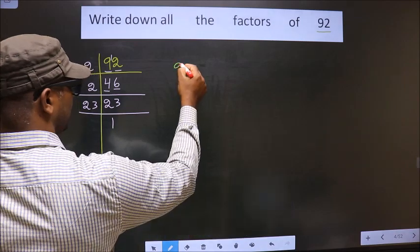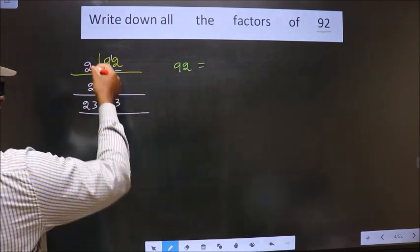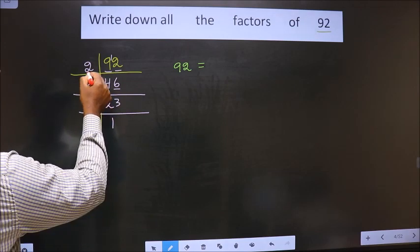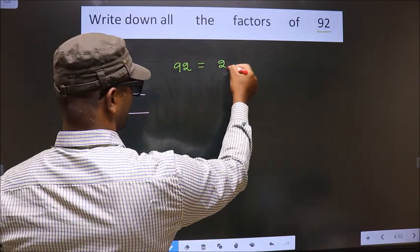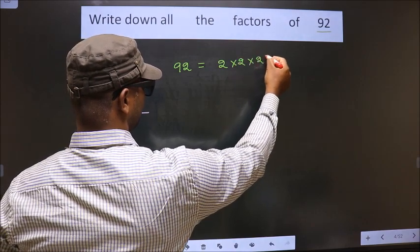Now 92 is equal to the product of these numbers, that is 2 into 2 into 23.